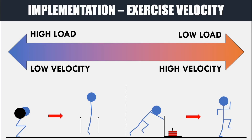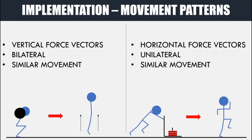Interestingly, recent research has also shown a potentiation effect the other way around, meaning it may be possible for a high velocity exercise to potentiate a heavy low velocity exercise, although evidence is still emerging and conclusions cannot be made as of yet. Movement patterns also play an important role. For the best effect we want to pair exercises with similar movement patterns. The back squat and vertical jump work well since both involve vertical force vectors, bilateral movements, and similar muscle and joint actions. The sled push to sprint example also works well due to both having horizontal force vectors, being unilateral exercises, and having similar muscle and joint actions.